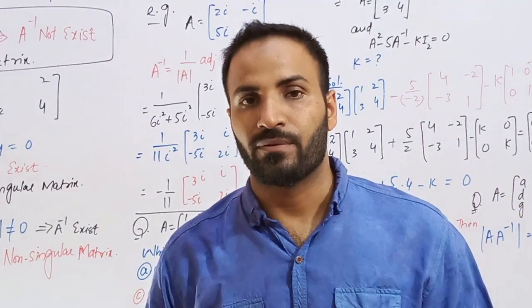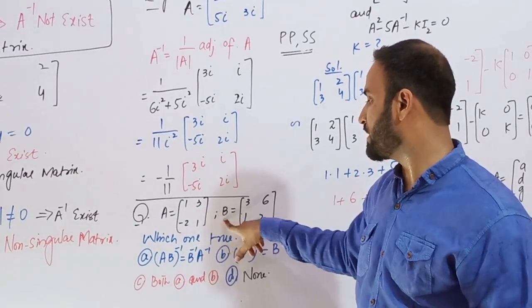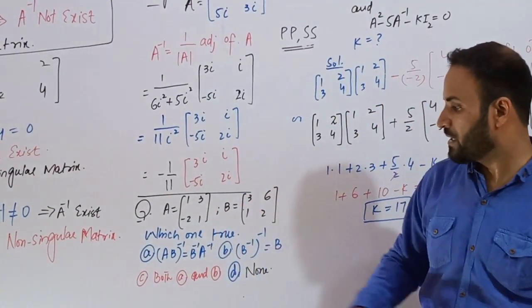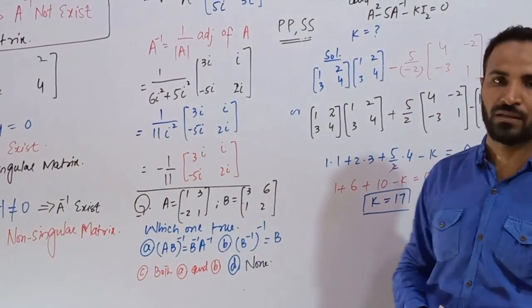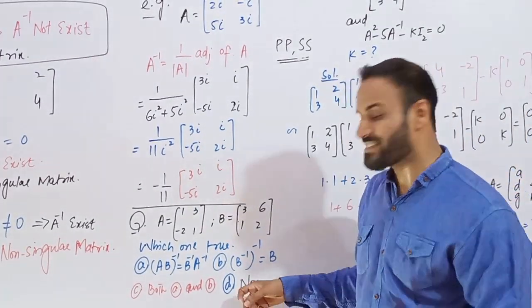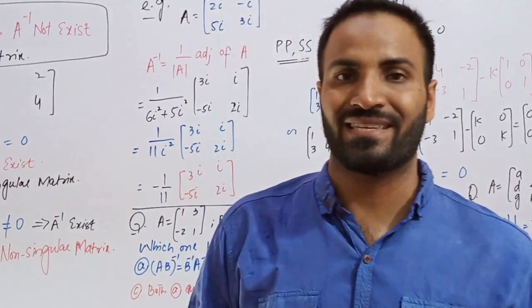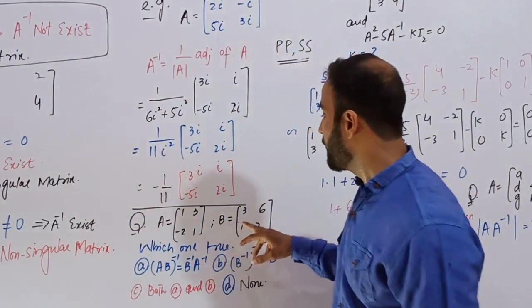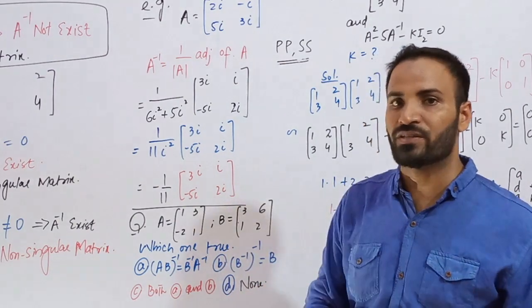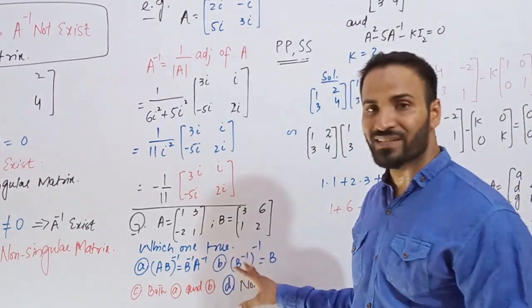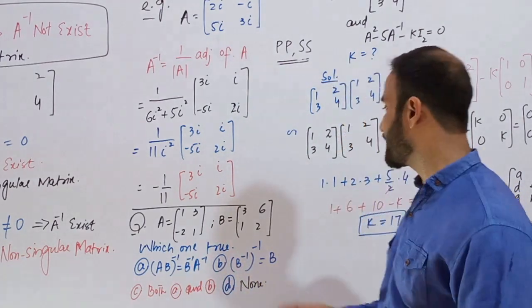Now an important exam question: given matrix A = [[1,3],[-2,1]] and B = [[3,6],[1,2]], which is true? Option A: (AB) inverse = B inverse × A inverse. Option B: (B inverse) inverse = B. Option C: both A and B. Option D: none. The answer is D (none), because the determinant of B is 6 minus 6 = 0, making B a singular matrix with no inverse. Since B inverse does not exist, neither statement is valid.